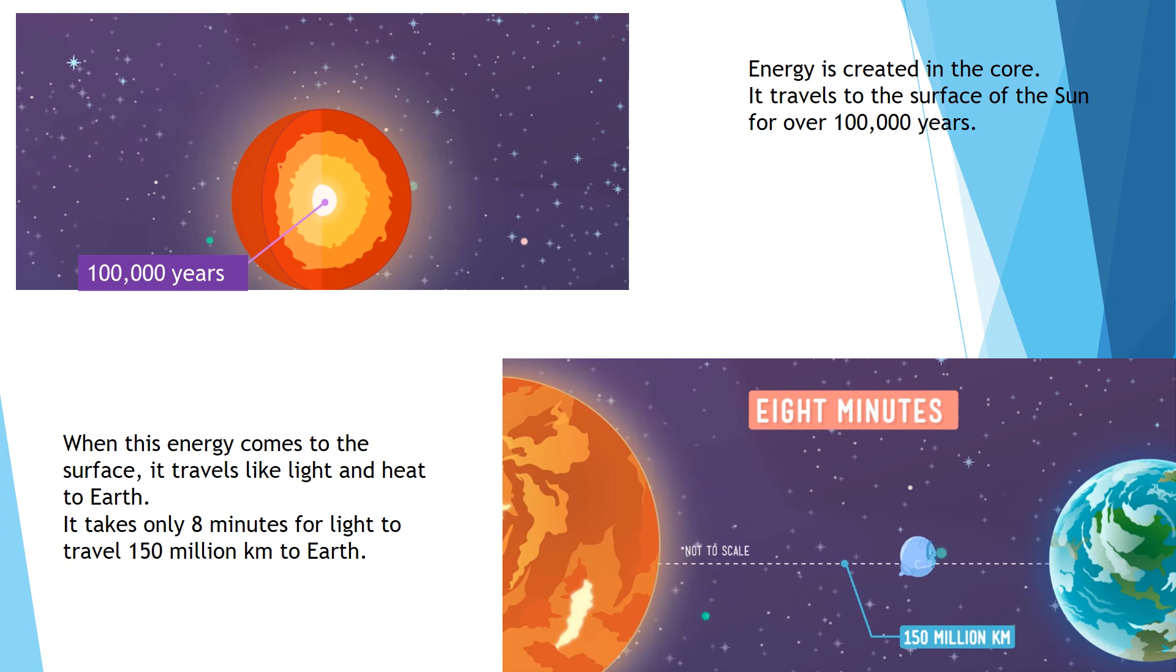Energy is created in the core. It travels to the surface of the sun for over 100,000 years. But when this energy comes to the surface, it travels like light and heat to Earth, and it takes only 8 minutes for light to travel 150 million kilometers.